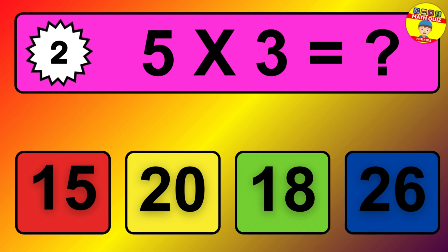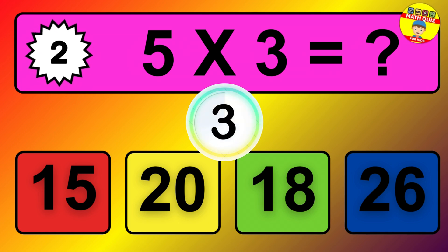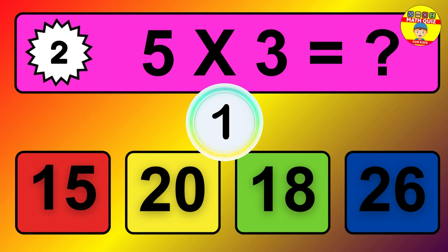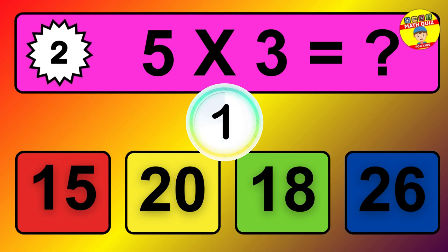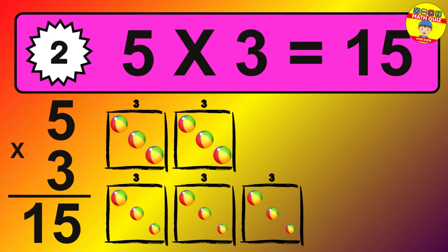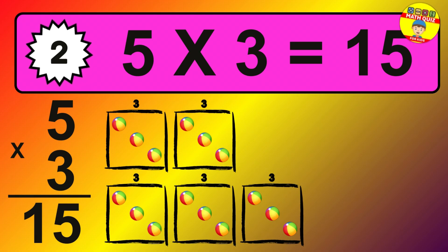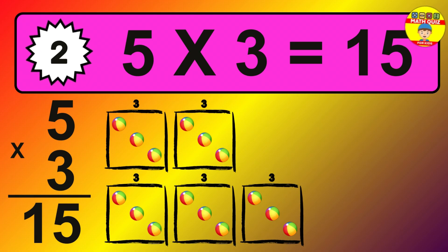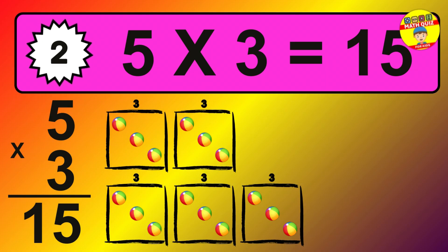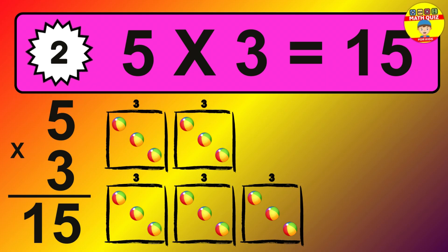Question 2. 5 times 3 equals what? The answer is 5 times 3 is 15. To calculate, we have 5 groups with 3 balls each one. So, how many balls do we have? 15 balls.